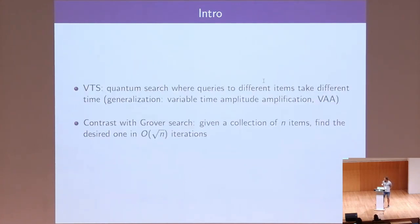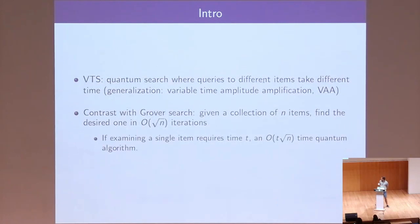As a warm-up, let us recall the Grover search: n items, square root of n iterations. And if we spend time t for each iteration, then this gives us the following kind of quantum algorithm. That basically assumes that for each item we spend the same time checking it.